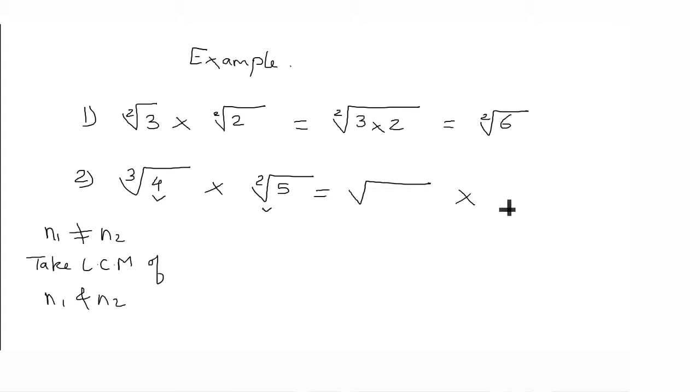So 3 and 2 ka LCM 6 hai. First, cube root of 4 mein, agar 3 ko 6 banana hai, tho meh 3 ko 2 se multiply karunga. Or agar 3 ko 2 se multiply kiya, tho balance karne ke liye 4 ban jayega 4 square. Similarly, 2 ko 6 banane ke liye 3 se multiply karunga. And 5 ban jayega 5 cube. So isse agar hain aage solve karunga, hameh melega 6th root of 16 into 6th root of 125. Dono ka order abhi same hai, tho hain isse multiply kar sakte hain. The final answer will come 6th root of 16 into 125 which is 6th root of 2000.